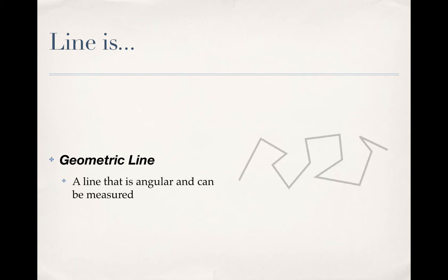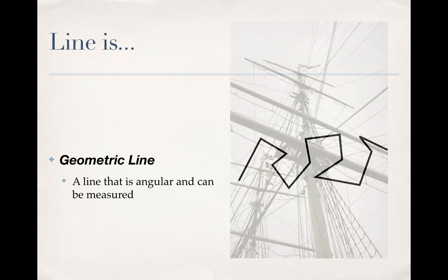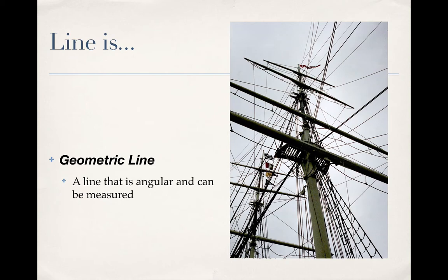So, like with shape and form, we have geometric lines. These are lines that are angular and can be measured. And in this photograph, looking at the rigging on this sail ship ends up giving you a whole bunch of geometric lines.